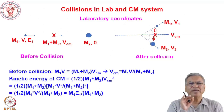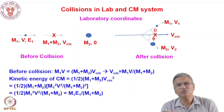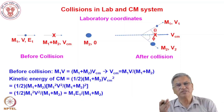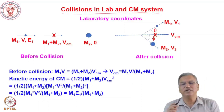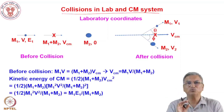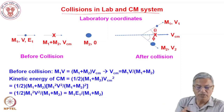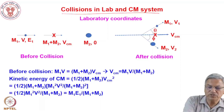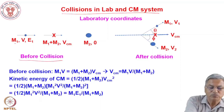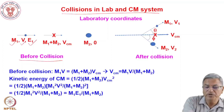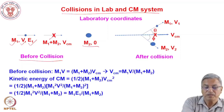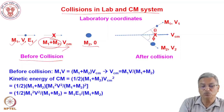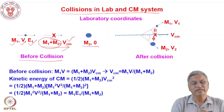When a projectile bombards a target, not all the energy of the projectile is available for the nuclear reaction to take place. Some energy is lost in moving the whole center of mass system. Therefore, discussing collisions in the laboratory system and center of mass system becomes important. In the laboratory system, the projectile with mass M1, energy E1, and velocity V is moving towards the stationary target. The center of mass, located between them, is also moving in the forward direction, with mass M1 + M2 and velocity VCM.